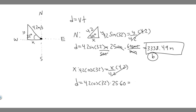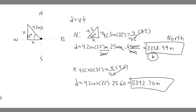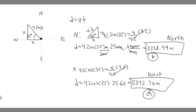Computing 4.2 × cos(32°) × 25 × 60 gives 5342.70 meters. This is in meters, and you can round as needed or convert to kilometers by dividing by 1000. So the final answers are: approximately 3338.49 meters north and 5342.70 meters west. Hopefully you found this useful.